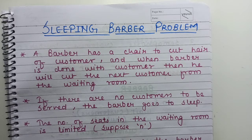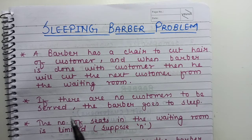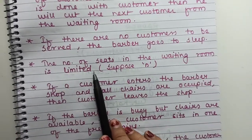When there is no customer, the barber sleeps on that chair. In the waiting room, there are N number of chairs. When a customer comes, it first checks the waiting room. If there is a free seat, it will sit there and wait for its turn. If there is no seat available, it will leave the barber place.